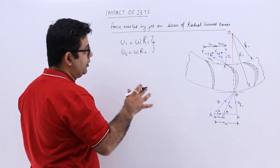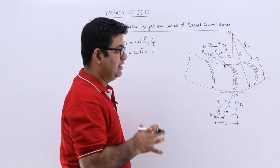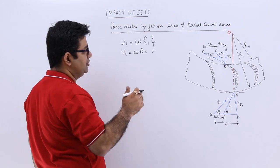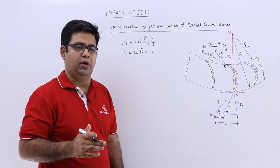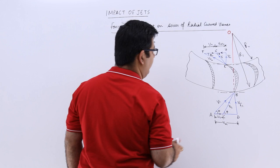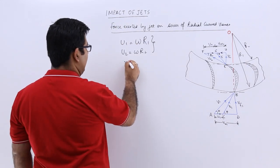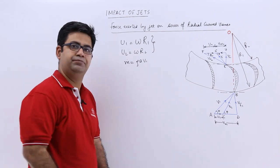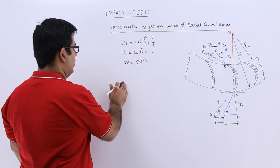This is one major difference that is there in this particular case compared to the flat plates. The mass flow rate of water striking the curved vanes would be, let us say, m dot = ρAv1.